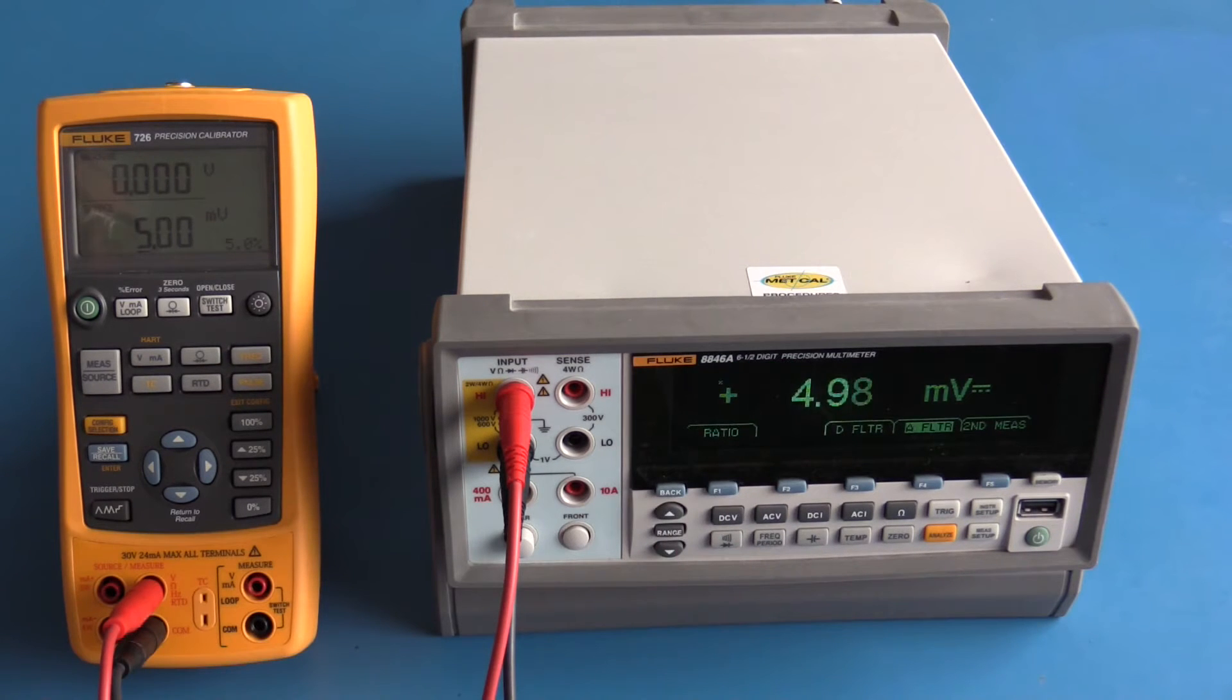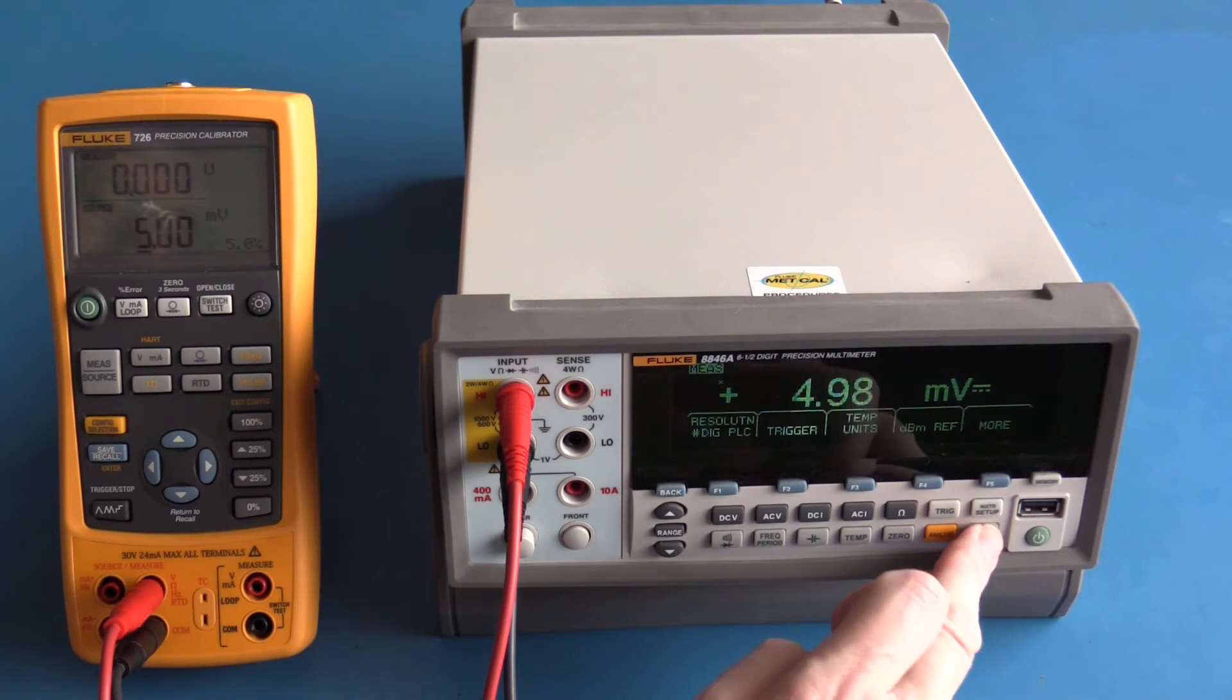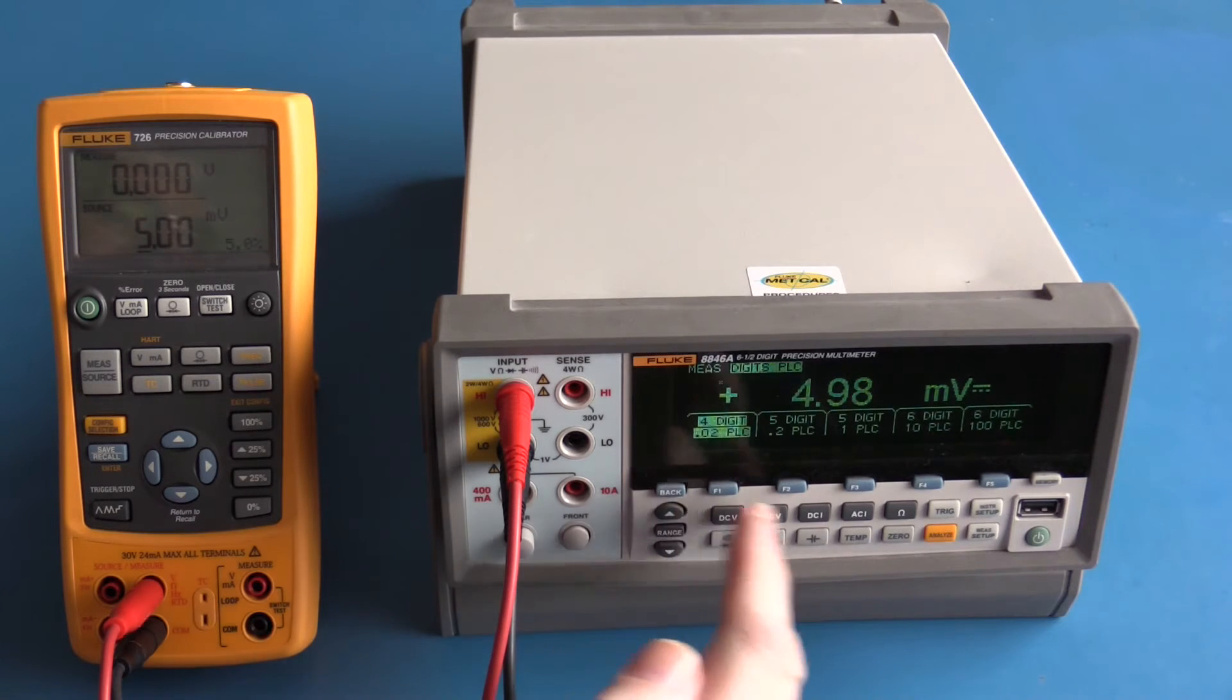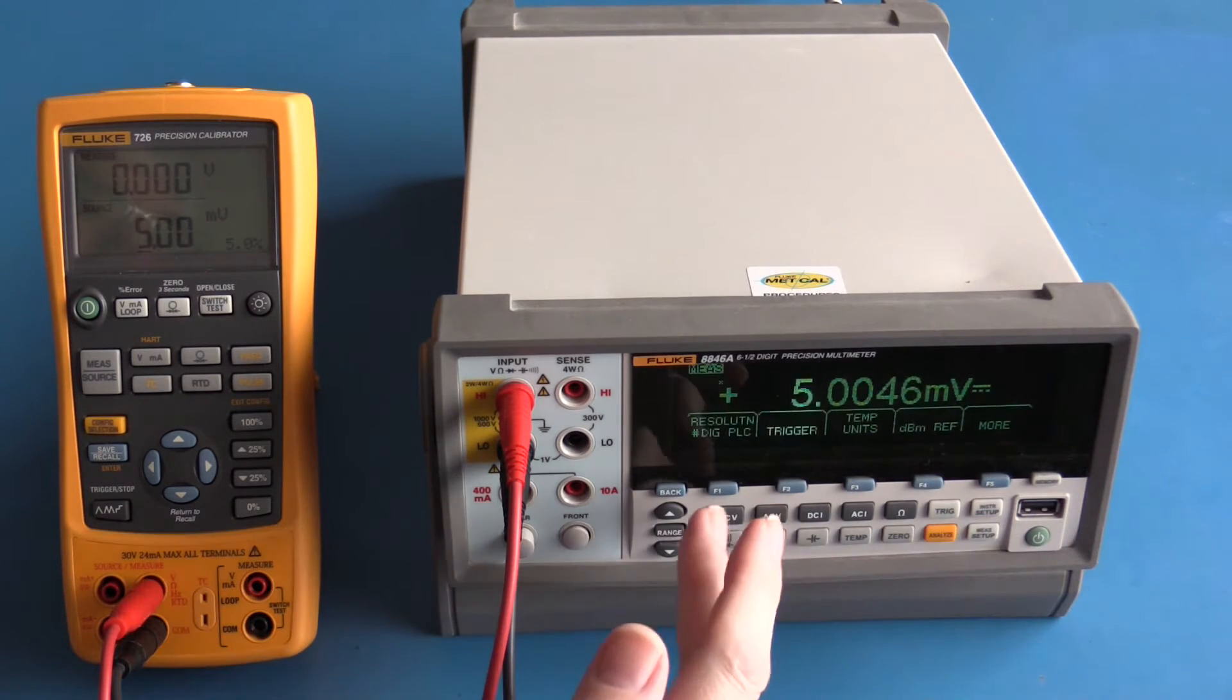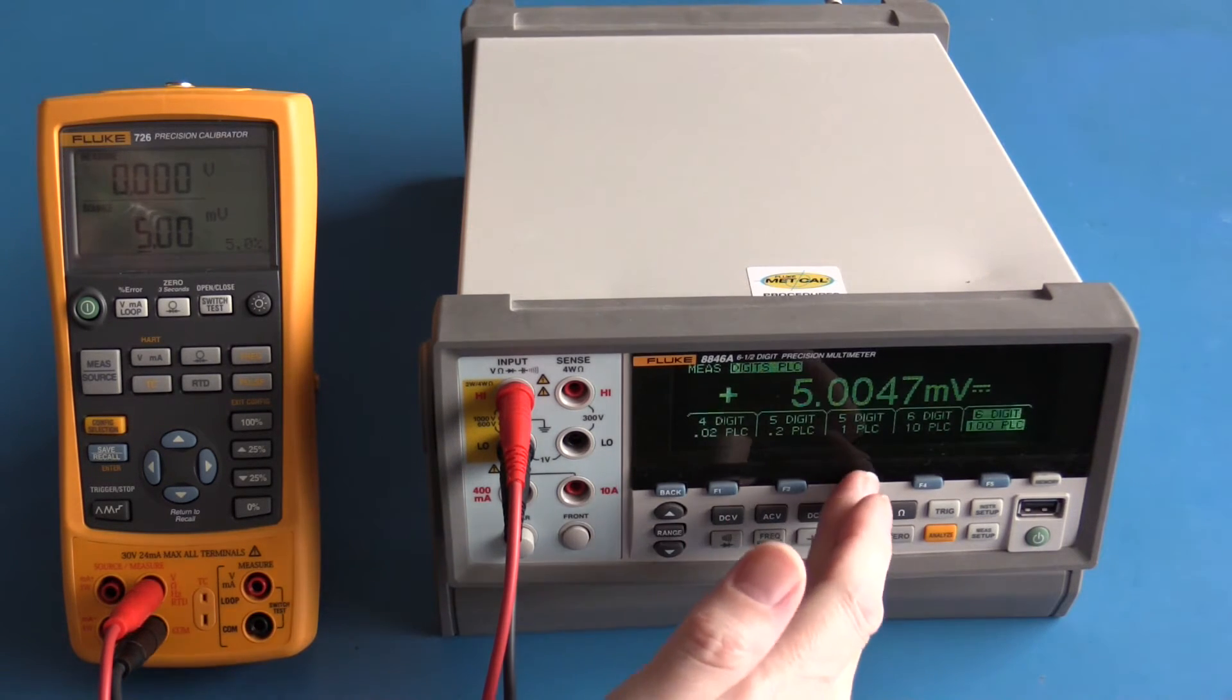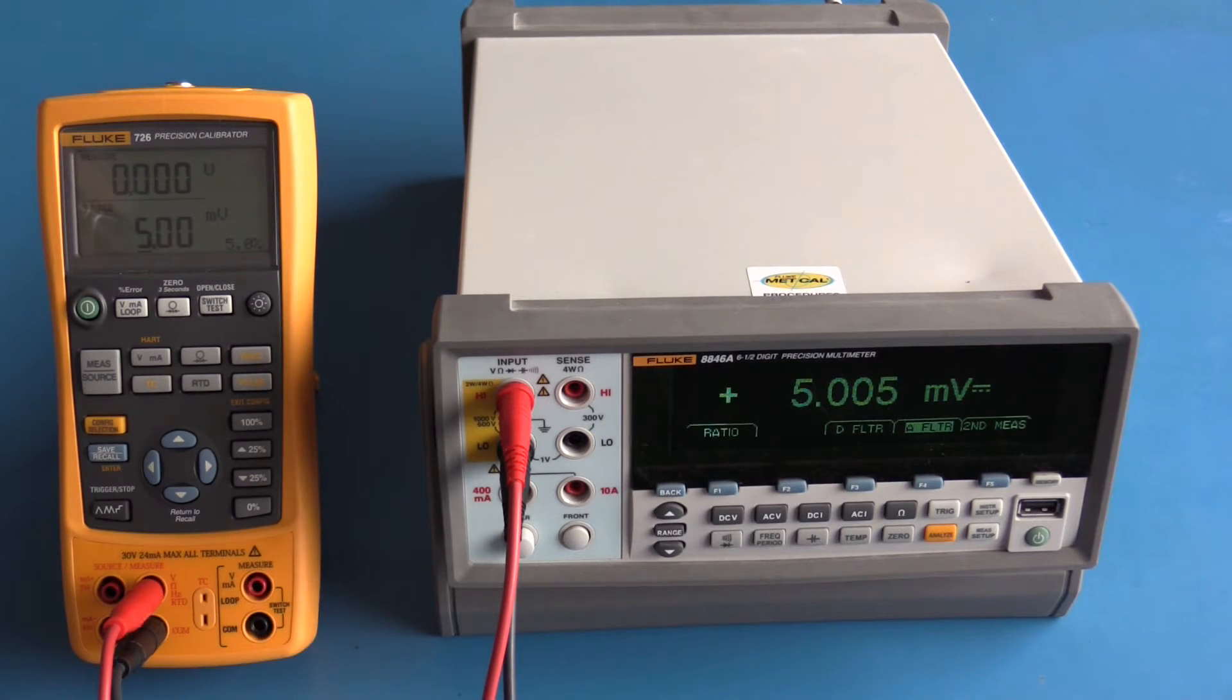This is four and a half digits, and this is six and a half digits. The meter is quite a bit slower. This is my preferred setup on the Fluke 8846a: it's five digits with an integration time of one PLC. This gives me a good compromise between the speed of measurement and also the readability of the display. When the display is being updated too quickly it becomes very hard to read.